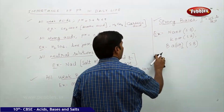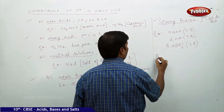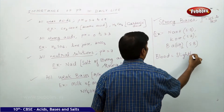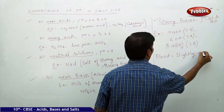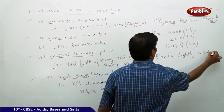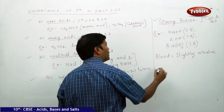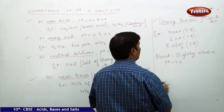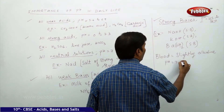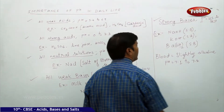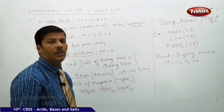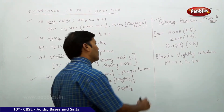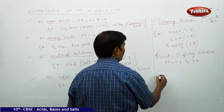For example, blood is slightly alkaline and its pH is 7.1 to 7.4. Blood is always slightly alkaline.